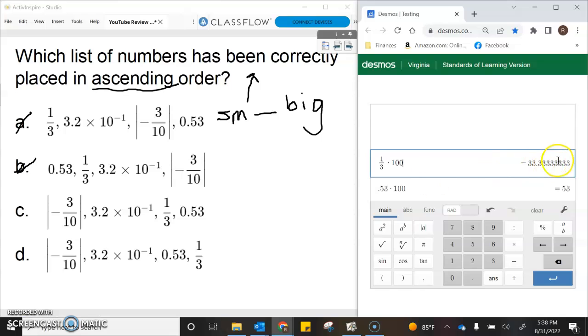The next smallest one would be 33.3, which is one-third. So this one, C, has got to be the answer. And last, it's 0.53, so this is definitely it.